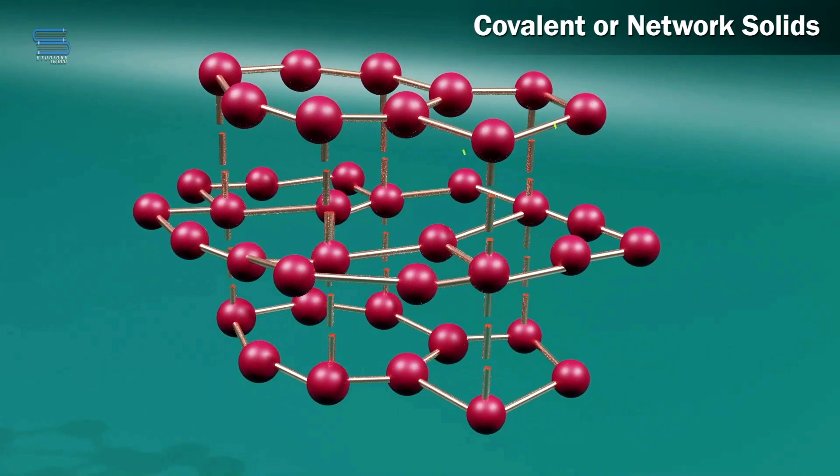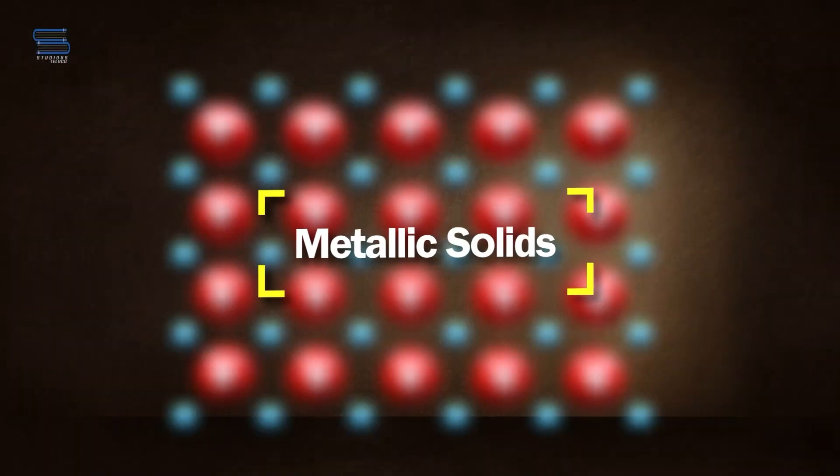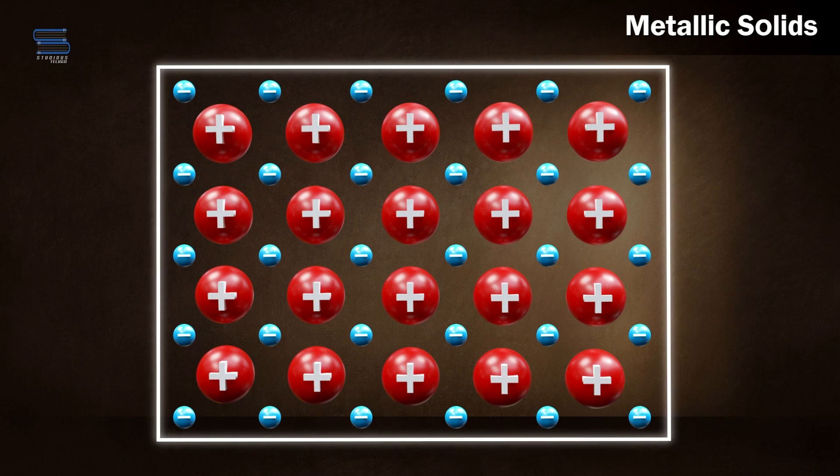Covalent solids consist of atoms bonded by shared electrons, forming a strong network. Metallic solids are made up of a sea of delocalized electrons surrounding positively charged metal ions, creating a structure that allows for high electrical conductivity.